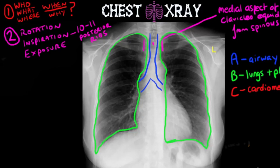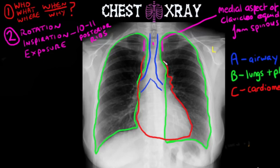For C, you are going to be looking at circulation or the cardiomediastinum. You are going to try to trace the outline of the heart, starting on the right side, tracing round the apex and then the aortic knuckle. You are looking for an enlarged heart or a wide mediastinum, and we will talk about reference points for sizes of particular anatomical structures in a moment.